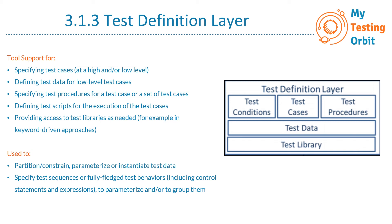The next point is to specify test sequences or fully fledged test behaviors, including control statements and expressions to parameterize and/or group them. We are specifying the test sequences which explain the test behavior, and for that we can also use control statements. For example, an if-else statement determines whether other statements will be executed or not, and a while loop decides how many times a statement needs to be executed — basically defining the behavior.